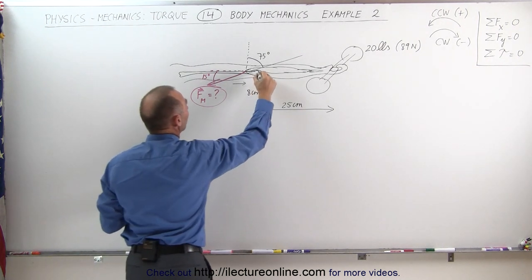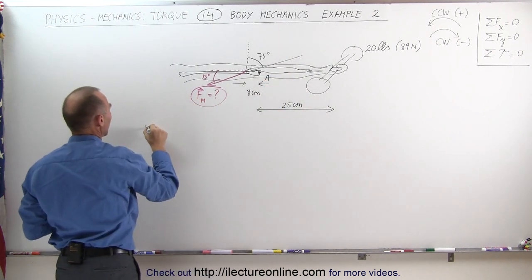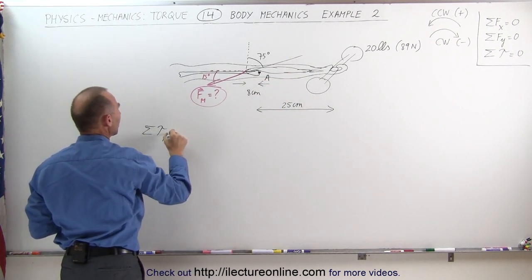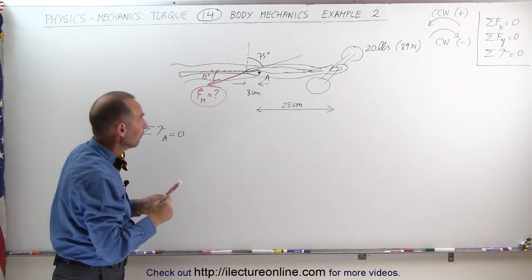We can say that if this is our pivot point - we call it pivot point A - then the sum of all the torques about point A must add up to zero. In this case there are going to be two torques.